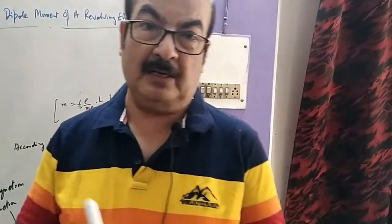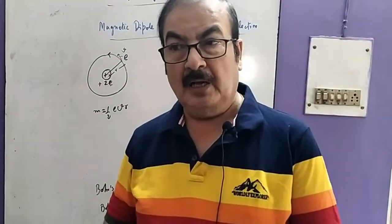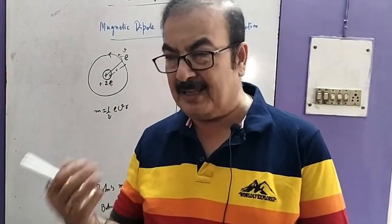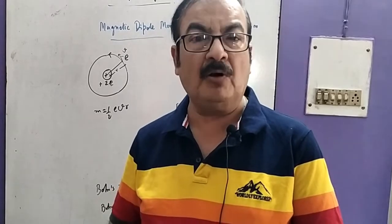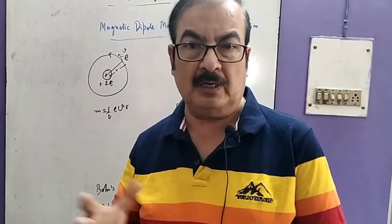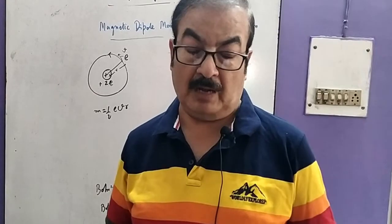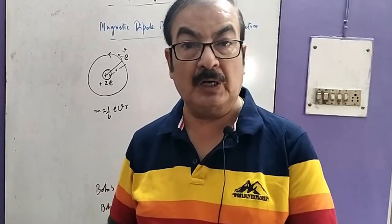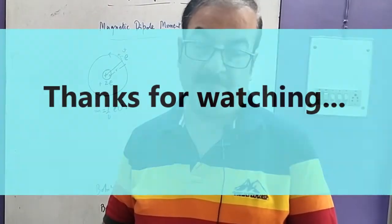With that, we have completed today's lecture. In the next lecture we will discuss torque acting on a coil, and also the structure and working of a galvanometer, and how it is converted into an ammeter or voltmeter. Thank you.